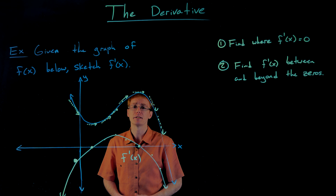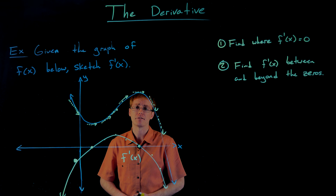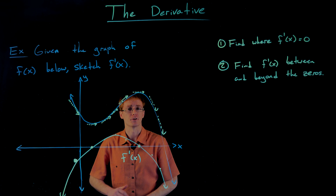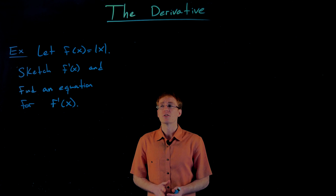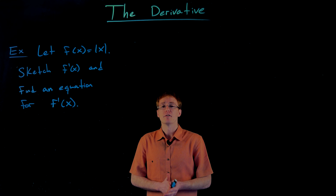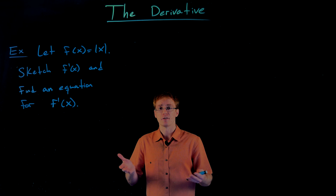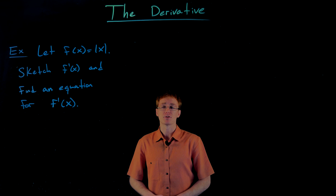So we have a bunch of points plotted to sketch the graph of our derivative. Now if we connect all these points, remembering that end behavior we described, this is going to be the sketch of f prime of x. Later on in the course we'll be able to look at the graph of the derivative to reproduce or find certain pieces of the graph of the original function, and vice versa.